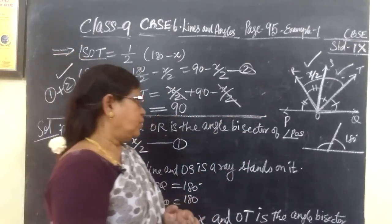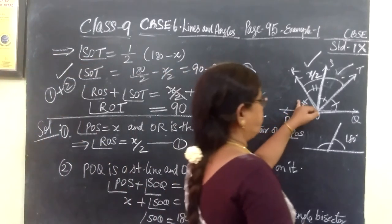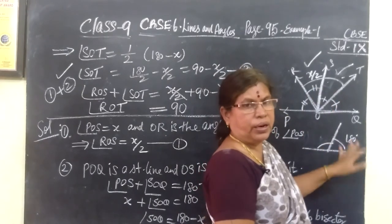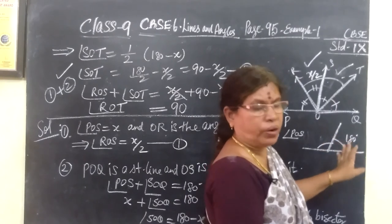In this problem we have used two properties. One is angle bisector. That means these two angles are equal. Another one, you are given a straight line and a ray standing on it. Therefore sum of the angles equal to 180 degrees.